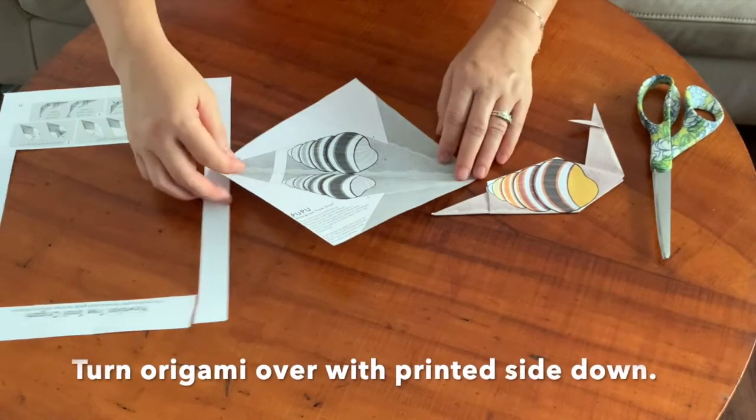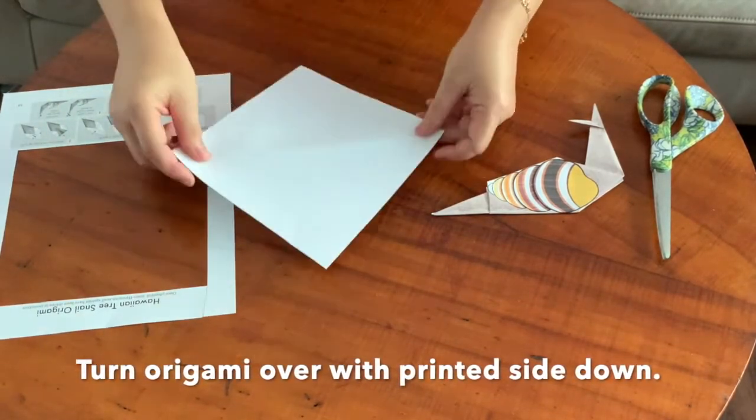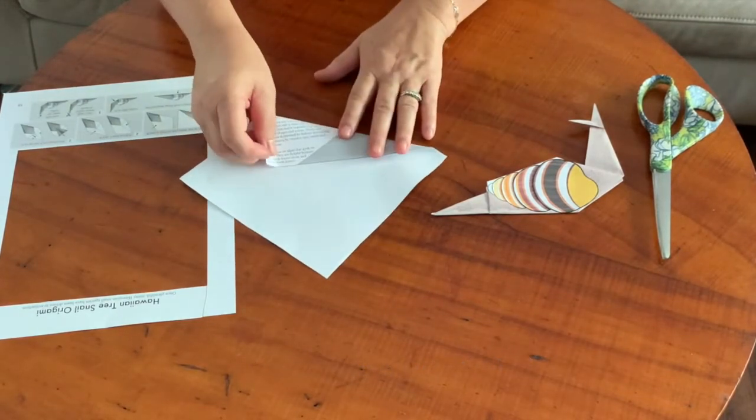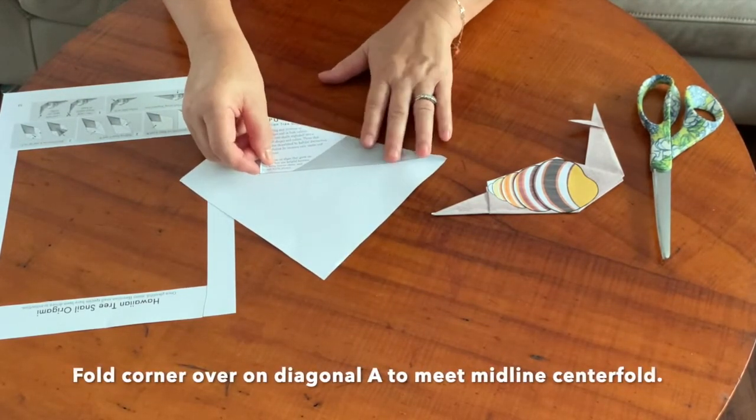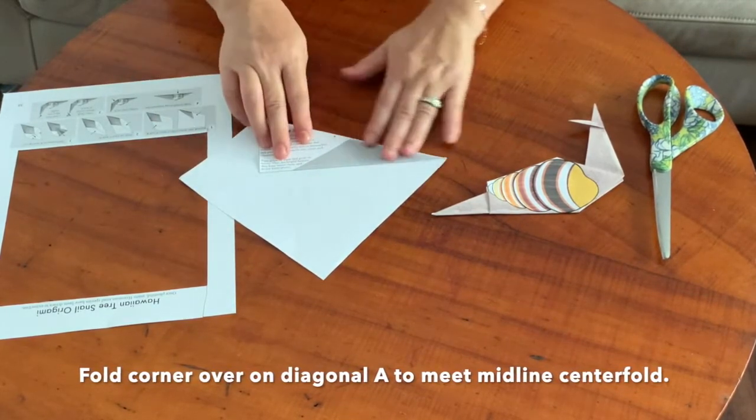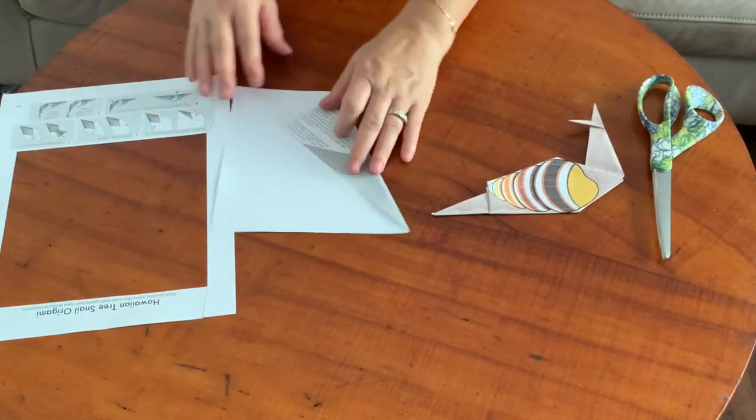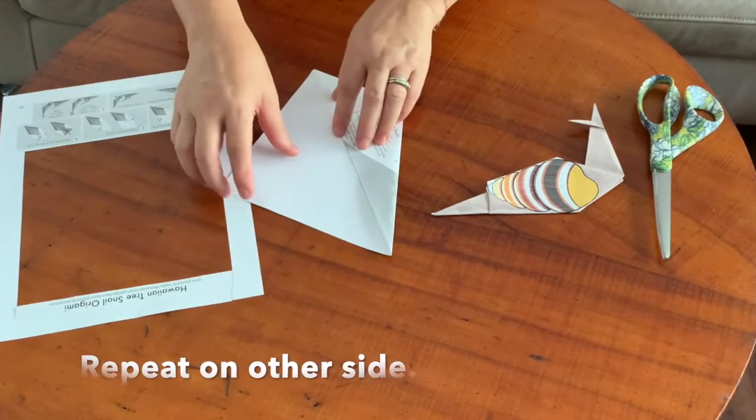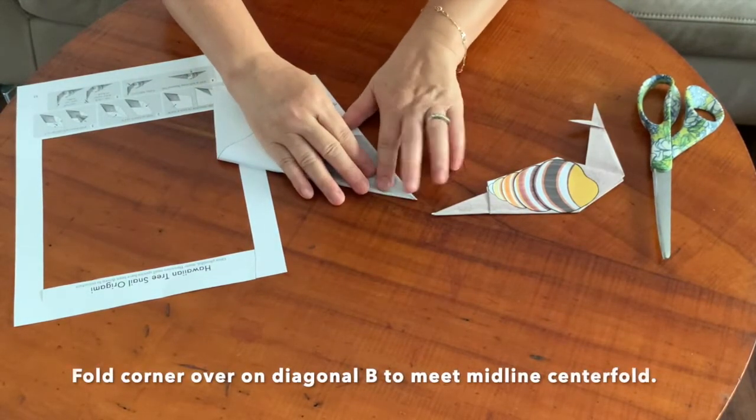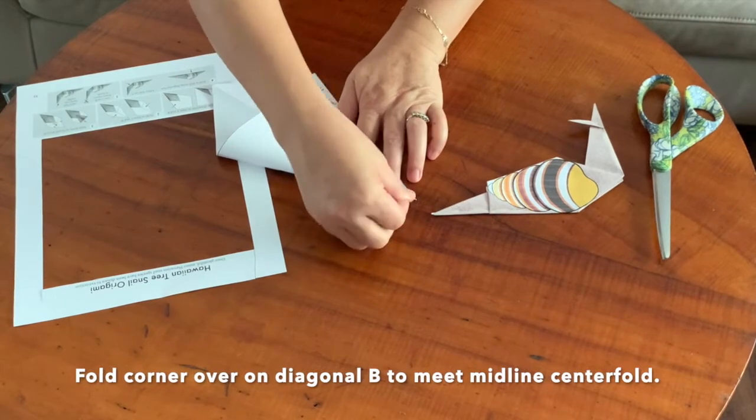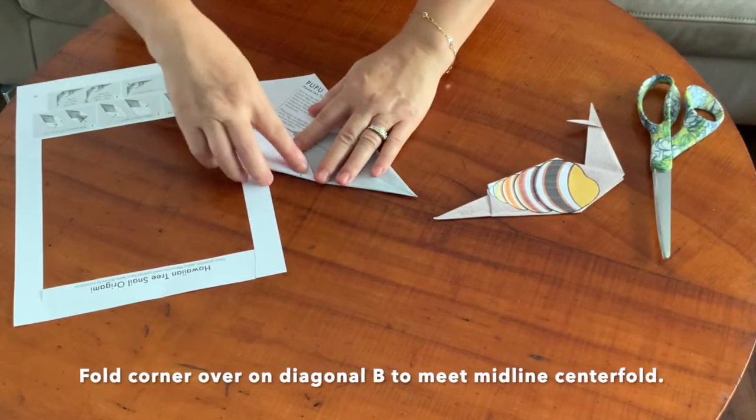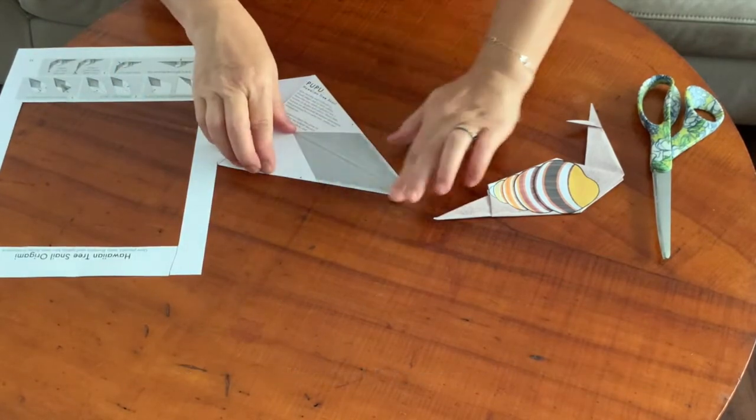Turn your origami over, and then you're going to fold up diagonally to meet that midline, that diagonal fold that you just created. That's your first fold, and you're going to repeat on the other side. Try to create a nice corner at the tip and then match this edge along with that diagonal fold that you created earlier.